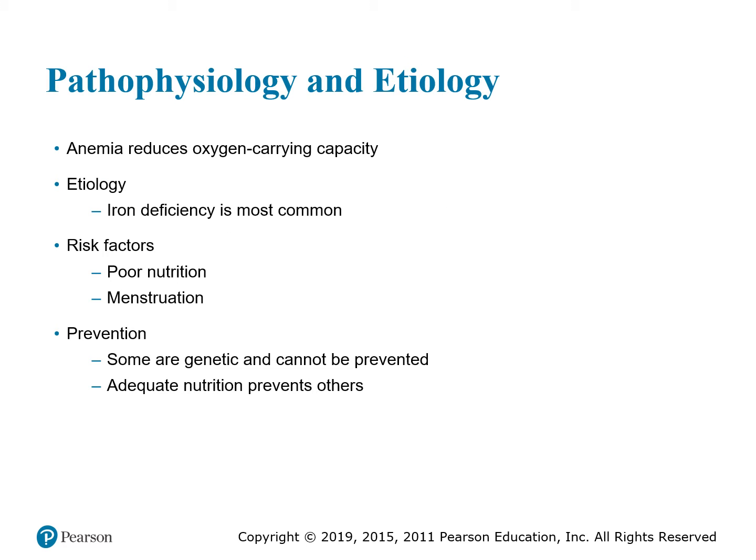Anemia reduces oxygen carrying capacity. When we have anemia, we don't have enough hemoglobin in the blood to carry the oxygen. If we don't have enough red blood cells, there's not enough hemoglobin to carry the oxygen. When the onset of anemia is slow, compensatory mechanisms kick in and mask the appearance of symptoms, and the body compensates.